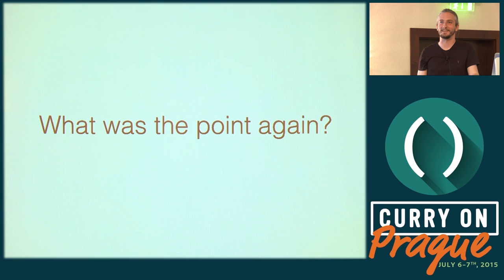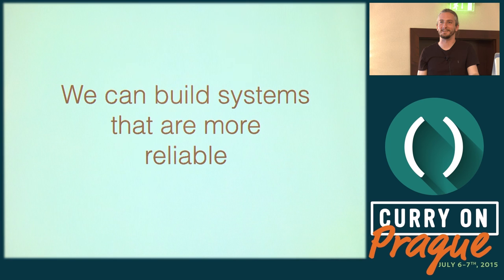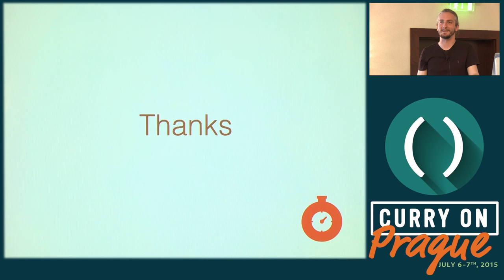The overall point: probabilistic algorithms, in the case of HyperLogLog, allow us to build things that we couldn't or wouldn't build otherwise, and in some cases completely change the economics of building a particular system. In the case of bimodal multicast, we can build systems that are more reliable. Rather than battling network partitions and outages, we build a system that just accepts that they're a thing and is eventually consistent without requiring infinite memory. That's all I got — thank you.